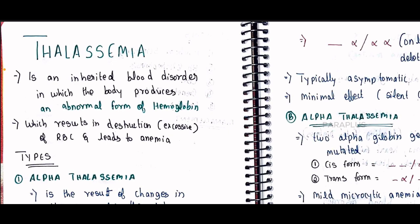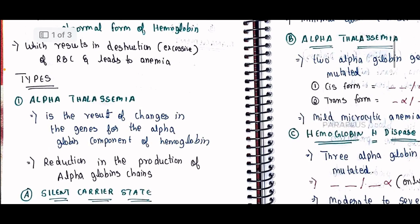Thalassemia is related to anemia. There are two types: alpha thalassemia and beta thalassemia.